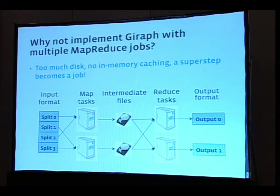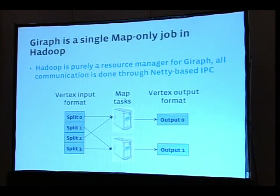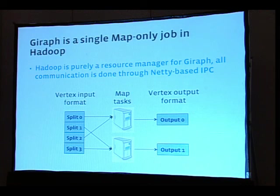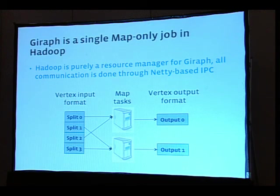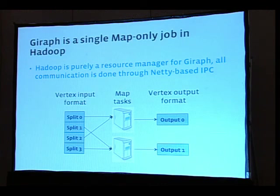We don't want to hit those disks or go through scheduling overhead. We implement as a map-only job in Hadoop and only use it for resource management. We set the input splits to the number of workers we want — if you want 100 workers, we say we'll have 100 input splits — plus a few extra for the master process. Once we have those map tasks, we do a lot of things behind the scenes. The main point is that we have a single job that does all the iterations, and that's why we get the performance boost. Everything's in main memory. We used to use Hadoop RPC for communication, which is pretty slow for sending billions of messages, so we converted to using Netty-based IPC, which is a lot faster.